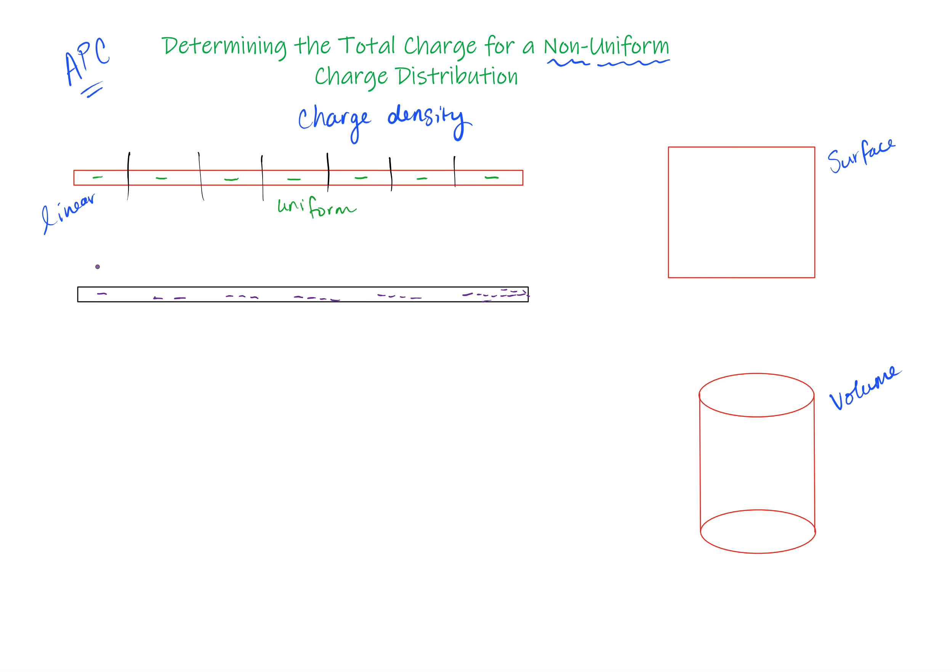Now I'm going to just make up a function for this, but basically the charge density could be described functionally as we work our way from, let's call this the zero end, to the full length end. Now I could also make zero in the middle and go from negative L over 2 all the way to L over 2, positive L over 2, but I'm just going to follow it this way. And basically what I'm going to say is it becomes more dense as I work my way up this way.